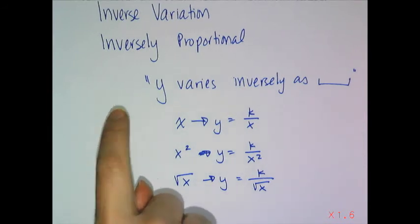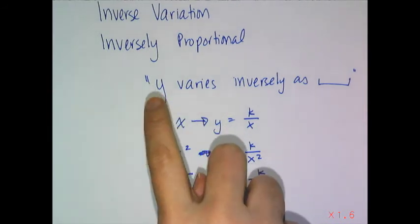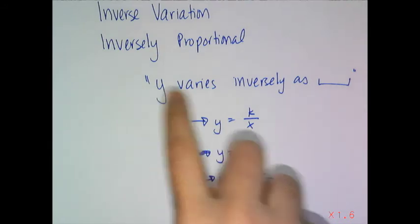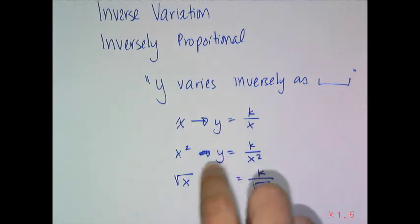Directly proportional is y equals k times x. Inversely means that independent variable, the x gets shoved into the denominator. So whatever is done to x is now in the denominator. And that's what inverse proportional means. Next, we'll look at an example.